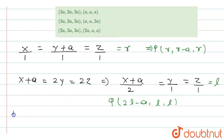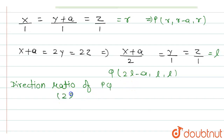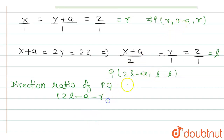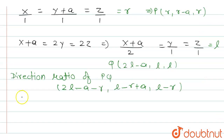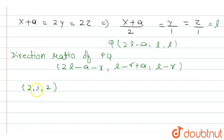The direction ratios of PQ can be written as (2l − a − r, l − (r − a), l − r), which simplifies to (2l − a − r, l − r + a, l − r). Let l1, m1, n1 represent components of Q and l2, m2, n2 for P. The direction ratios of PQ are proportional to 2, 1, 2 as given in the question.